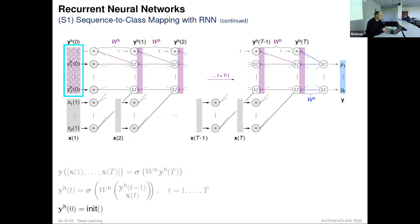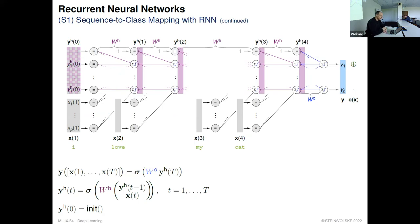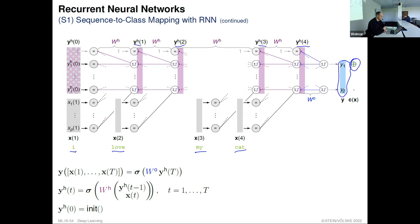We have four hidden vectors. We input 'I love my cat' — exactly these vectors. We compute some result and compare it to the ground truth. That's the first task — I demonstrated to you how it is done with the RNN.